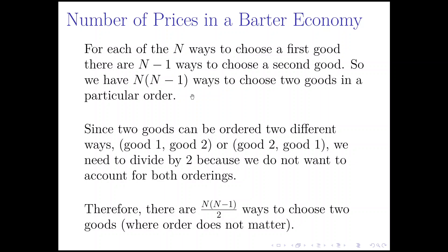But again, we don't want to count pairs of goods where we choose apples and then bananas as different from choosing bananas and then apples. Since we're choosing pairs of goods, any pair can only be ordered one of two different ways — good one then good two, or good two then good one. Since there are two ways to order any pair and we don't want to double count, we divide by two. So what we're left with is N times (N minus one) divided by two ways to choose two goods where the order does not matter.